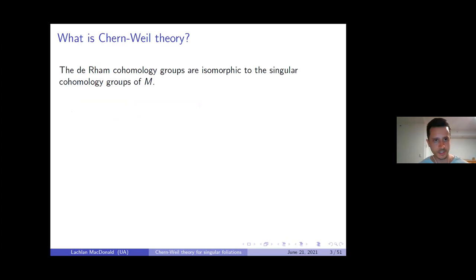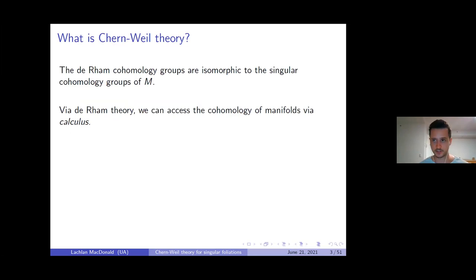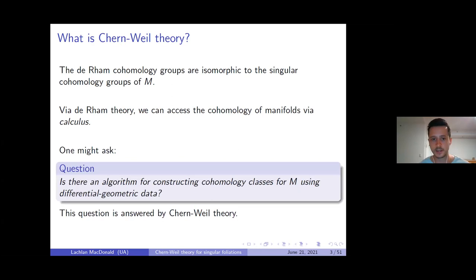To motivate it quickly: recall from the de Rham theorem that the de Rham cohomology groups of a manifold are isomorphic to the singular cohomology. This means we can access the topology of manifolds via calculus, i.e., geometry. The question is: can you give some algorithm for constructing characteristic classes for a manifold using geometric data — for instance, a Riemannian metric? This is broadly what is answered by Chern-Weil theory.